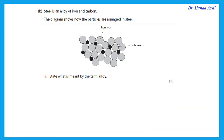Steel is an alloy of iron and carbon. State what is meant by the term alloy. An alloy is a mixture of metals and other elements — it could be metal with metal, or metal with something like carbon.